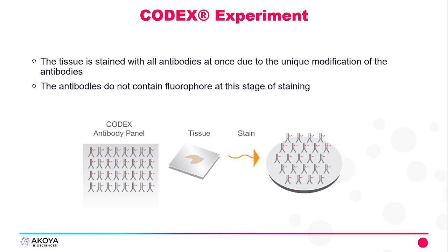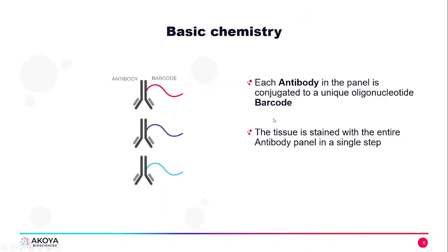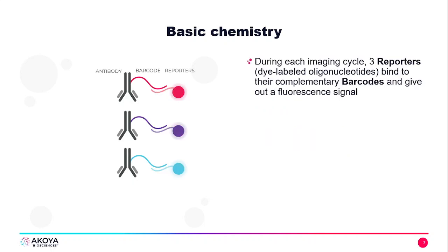At this point there are no fluorophores on the tissue—just these DNA barcodes on the antibodies. These DNA barcoded antibodies allow us to bind fluorophores with the complementary oligonucleotides.